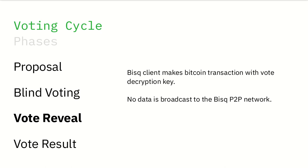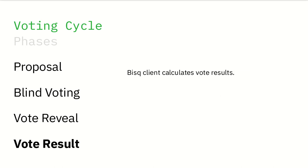During the vote reveal phase, BISC clients make a Bitcoin transaction with their vote decryption key. As a user, you don't have to do anything during this phase — the BISC client will take care of making the Bitcoin transaction on its own. Just make sure your client goes online during this phase. Then in the vote result phase, each BISC node will calculate the result of voting based on all ballots it's gathered from the BISC peer-to-peer network. Each ballot will be encrypted, so it'll use the decryption keys from the vote reveal transactions, and it will get voting weights from the blind voting transactions.